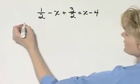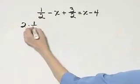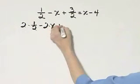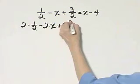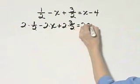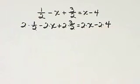So let me go ahead and do that. I'll write down 2 times this term minus 2 times that plus 2 times 3 halves is equal to 2 times x minus 2 times 4. Every single term is multiplied by 2.